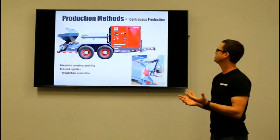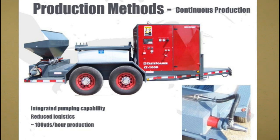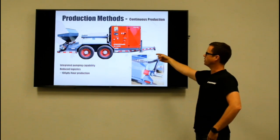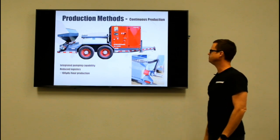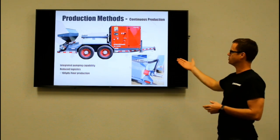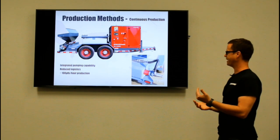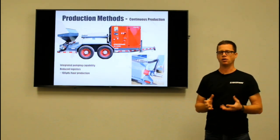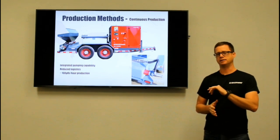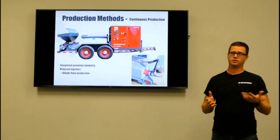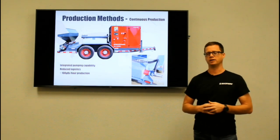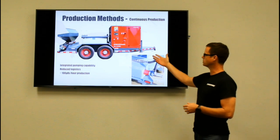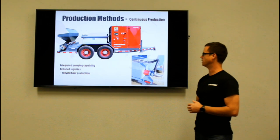The second production method is the continuous production method. Here's a photo of a CT100D — this machine has an integrated pump, and instead of introducing the foam into the ready mix truck we're actually injecting the foam on the discharge side of the pump. A couple of advantages: we have a pump integrated into the machine, and we reduce logistics because we can bring out a full truckload of slurry — typically seven to eight yards — and inject the foam in-line on the discharge side, turning eight yards of material into 25 to 30 yards of cellular concrete at around 30 PCF. This machine is rated up to 100 yards per hour of production capacity at 30 PCF.